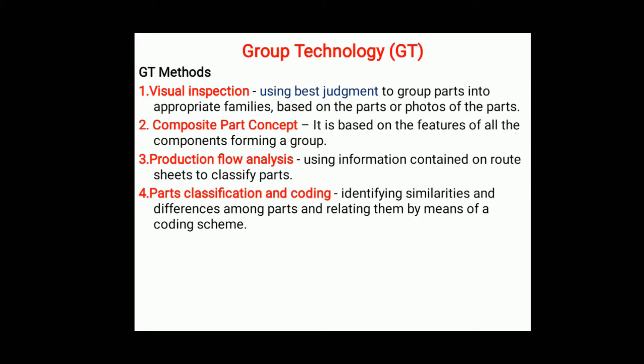The third method is production flow analysis. In this method, we form groups using information from operation numbers and operation sheets, classifying parts based on what operations are performed on them. By using machining operations, we create separate groups.